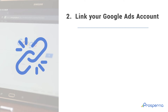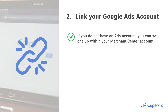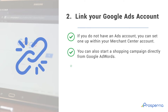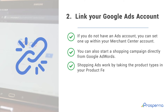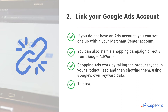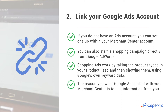Number 2: Link your Google Ads Account. If you do not have an ads account, you can set one up within your Merchant Center account. You can also start a shopping campaign directly from Google AdWords. Shopping ads work by taking the product types in your product feed and then showing them using Google's own keyword data. The reason you want Google Ads linked with your Merchant Center is to pull information from your product feed faster.